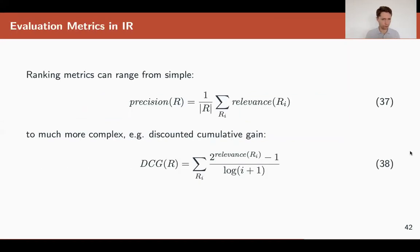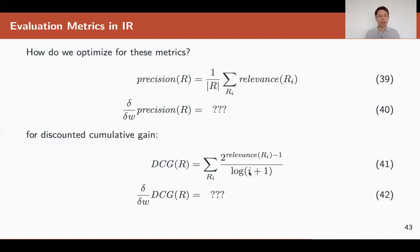Now, for example, as I said, simple precision, which is just the sum of relevance divided by the number of documents or this cumulative gain.